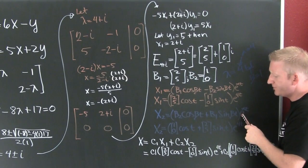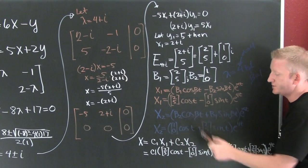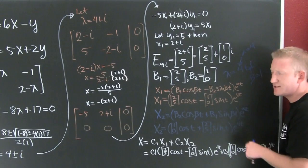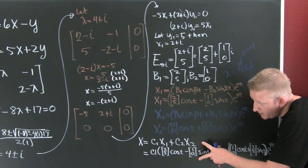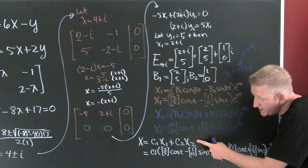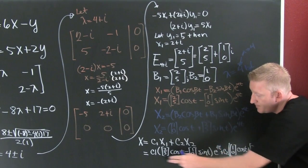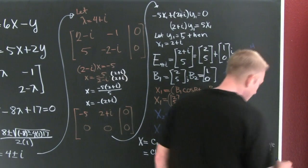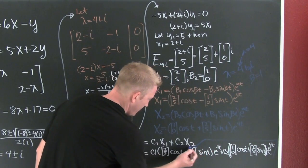Now I do the same thing for the second solution, switching my real and imaginary vectors. The general solution is X equals C1 X1 plus C2 X2. I plug it all in and that gives the complete general solution.